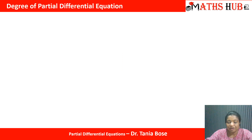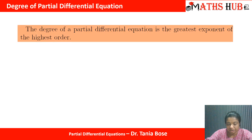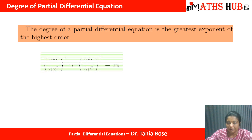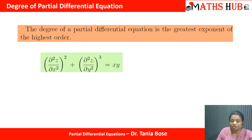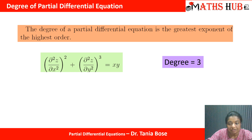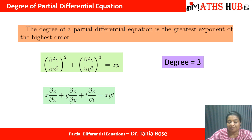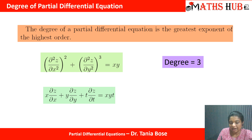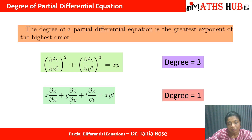Next, the degree of a partial differential equation is the exponent of the highest-order derivative. For example, if the highest exponent is 3, the degree of that differential equation is 3. For the second equation, all derivatives have exponent 1, so the degree is 1.